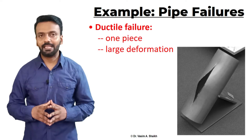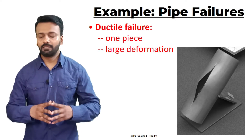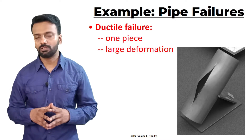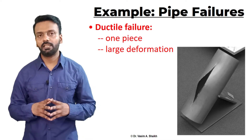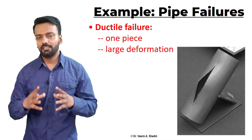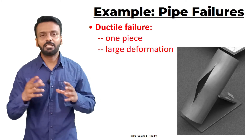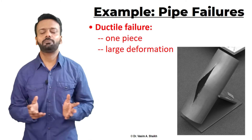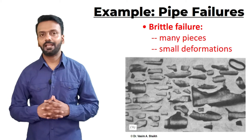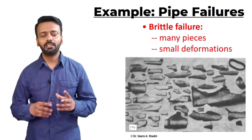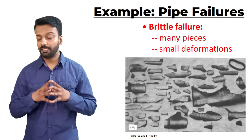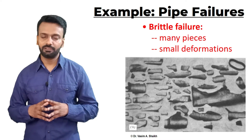Let us look at an example of ductile failure — specifically a pipe which has failed because of ductile failure. As we see, the material which has failed has a very large deformation and is basically one piece. On the other hand, when we see a brittle fracture, it will have very small deformation and the material will break into many pieces.